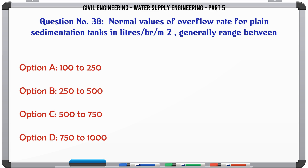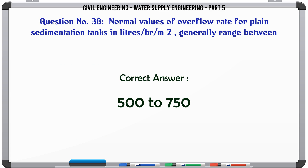Normal values of overflow rate for plain sedimentation tanks, in liters per hour per m², generally range between: A. 100 to 250, B. 250 to 500, C. 500 to 750, D. 750 to 1000. The correct answer is 500 to 750.